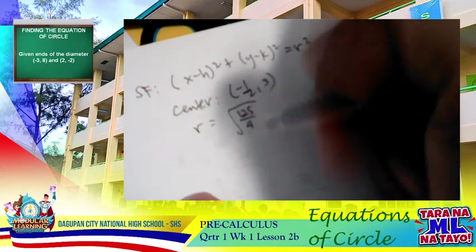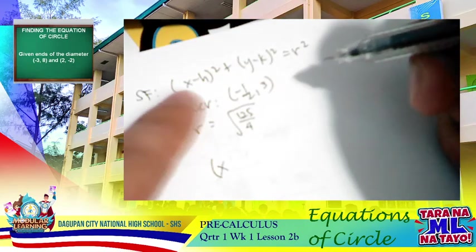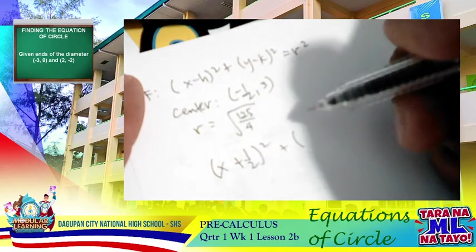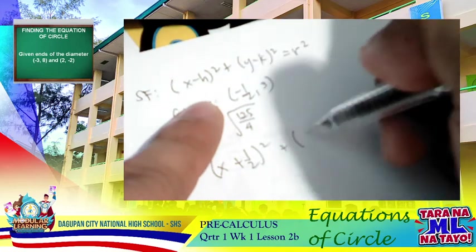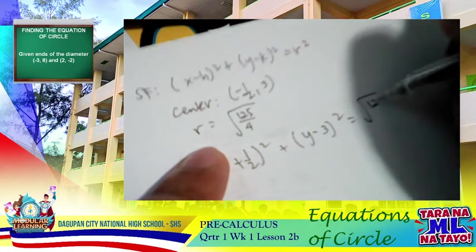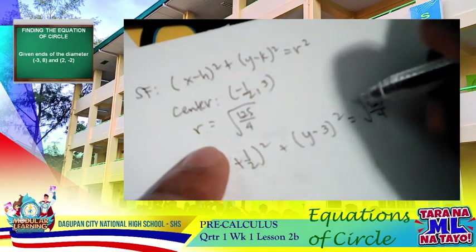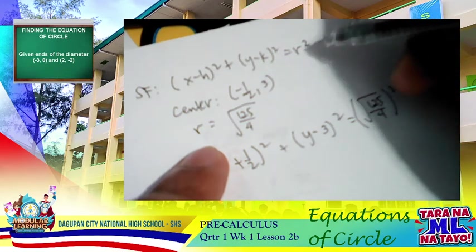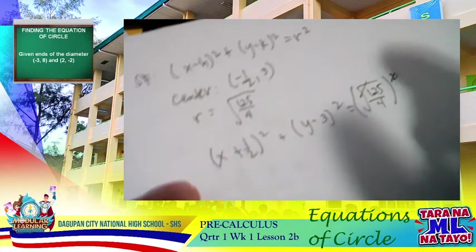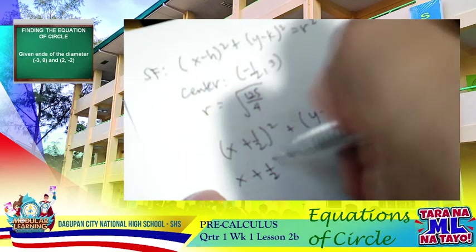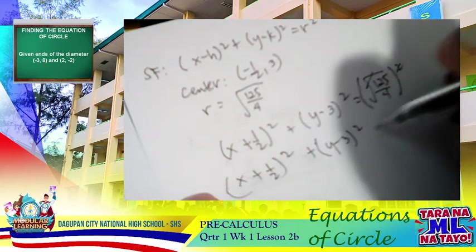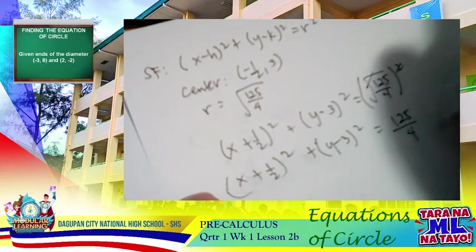It's just a matter of substituting into our formula. Our h is negative 1 half, so x minus negative 1 half becomes x plus 1 half. Then y minus 3. Our r is square root of 125 over 4, and squaring it cancels the radical. So the equation is: x plus 1 half, quantity squared, plus y minus 3, quantity squared, equals 125 over 4.